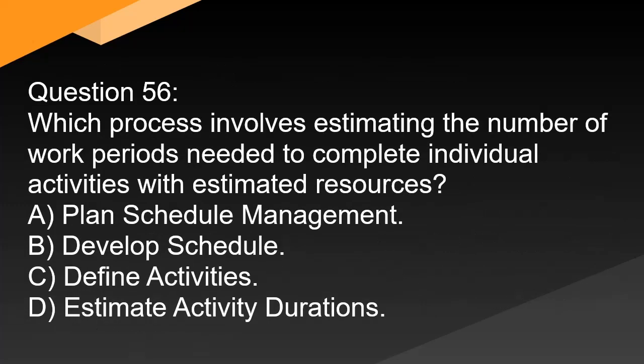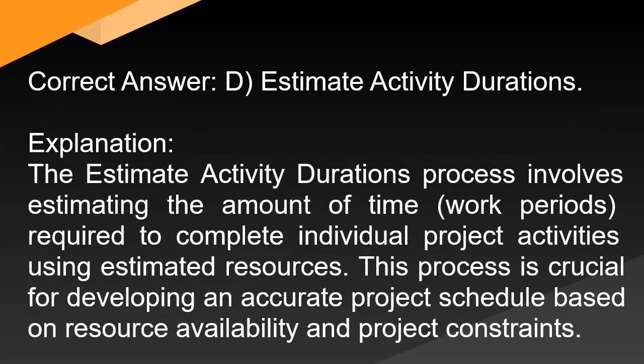Question 56: Which process involves estimating the number of work periods needed to complete individual activities with estimated resources? A. Plan schedule management. B. Develop schedule. C. Define activities. D. Estimate activity durations. Correct answer: D. Estimate activity durations. Explanation: The estimate activity durations process involves estimating the amount of time (work periods) required to complete individual project activities using estimated resources. This process is crucial for developing an accurate project schedule based on resource availability and project constraints.